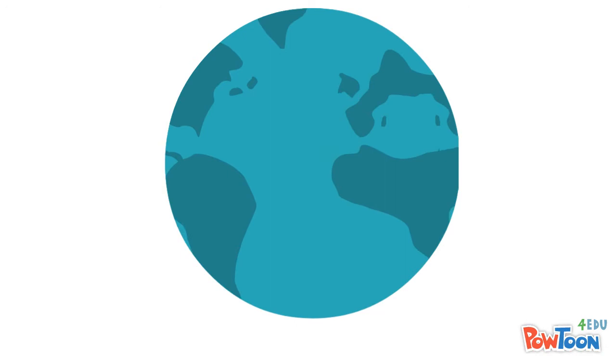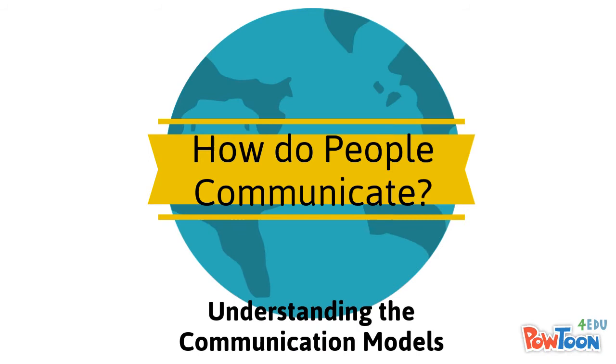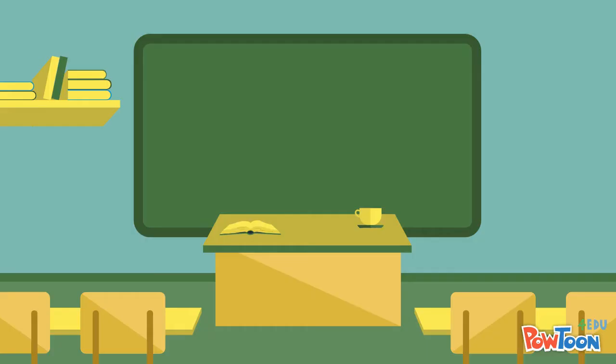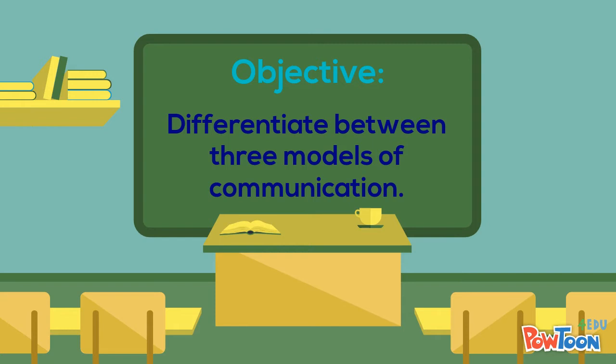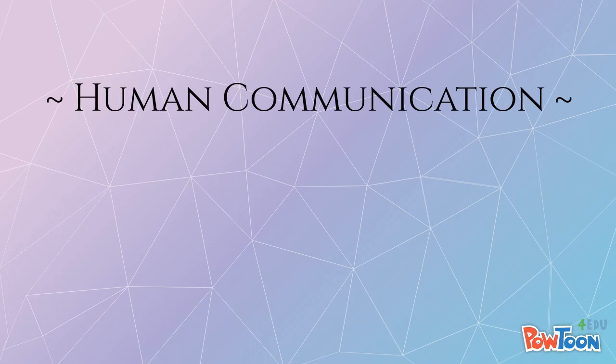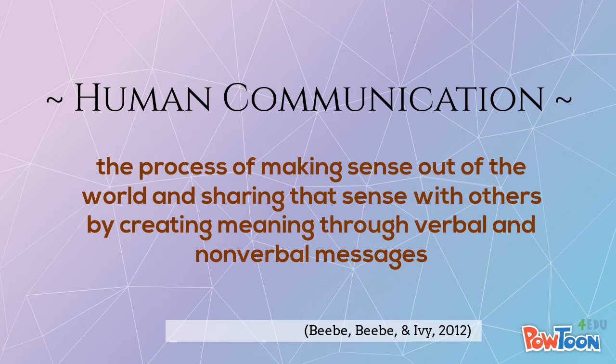In this video, you'll learn about how people communicate by having a basic understanding of what communication looks like. Those who successfully complete the module that this video accompanies will be able to differentiate the three models of communication. But first, let's define communication. Human communication is the process of making sense out of the world and sharing that sense with others by creating meaning through verbal and nonverbal messages.